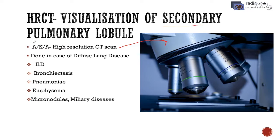These smallest areas of the lung are known as secondary pulmonary lobules. So HRCT scan is done in case of diffuse lung diseases like interstitial lung disease, where the walls of the alveoli are thickened; bronchitis, where small bronchi may be enlarged; interstitial pneumonia; emphysema, where there is destruction of the interstitium. We can also visualize small nodules like micronodules and miliary disease.